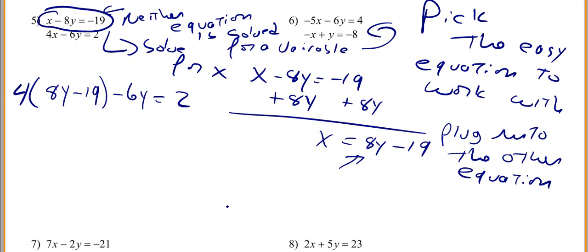I want to distribute my 4, so I have 4 times 8, which is 32, and I have 4 times 19, that is 76, and that is negative 76. I have got my y there, 32y minus 76 minus 6y equals 2. Combine like terms, so 32 minus 6, so I have got 26y minus 76 equals 2.